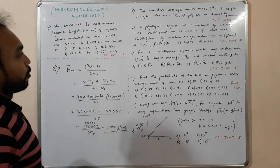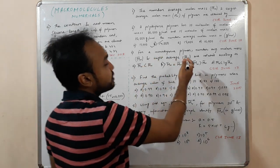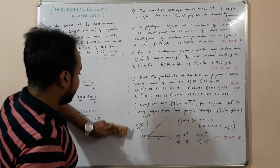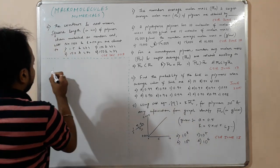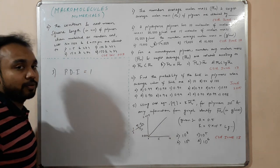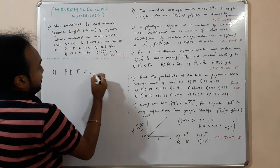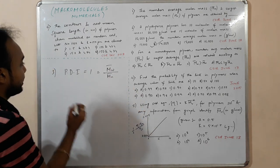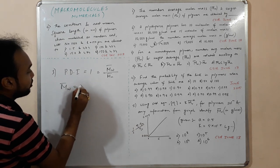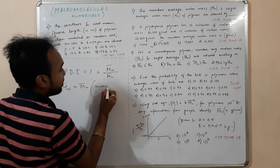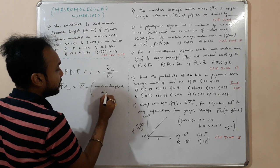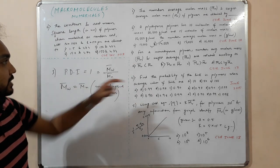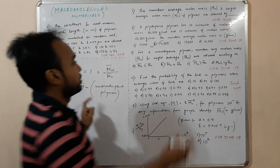Next: for a monodispersed polymer, how are Mn and Mw related? For a monodispersed polymer, the PDI value is 1. If PDI equals 1, that means Mw is equal to Mn. For a polydispersed polymer, Mw is always greater than Mn. But since we are asked about a monodispersed polymer, Mw equals Mn, so option B is correct.